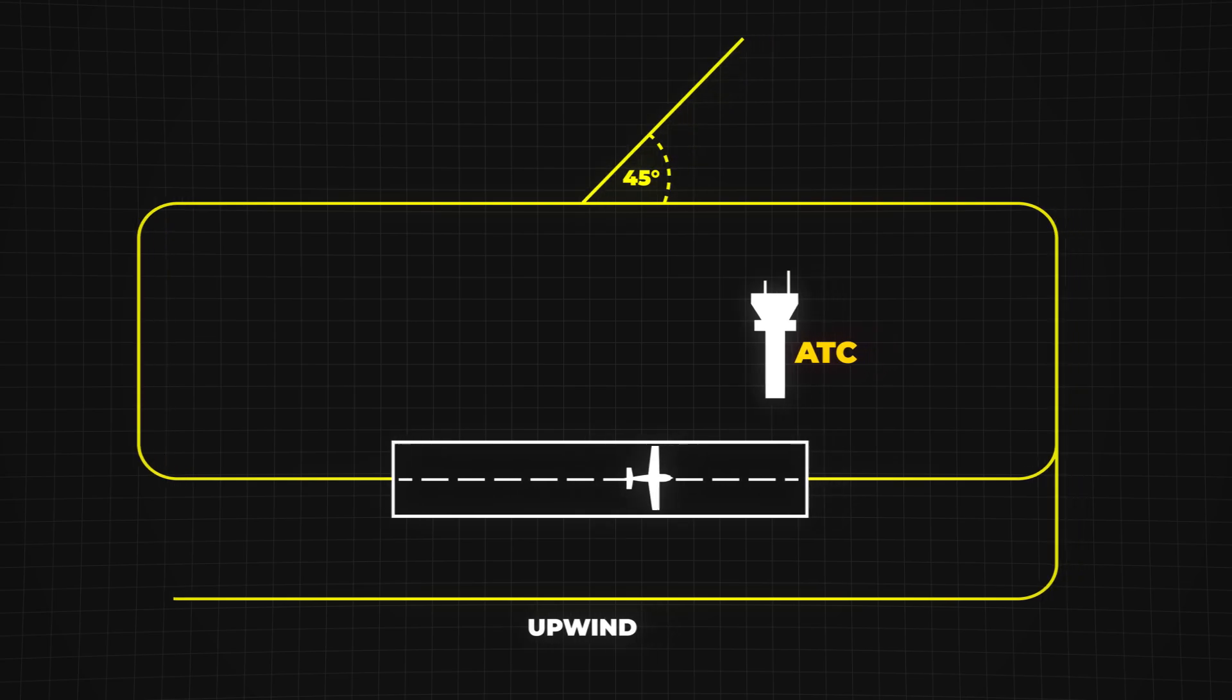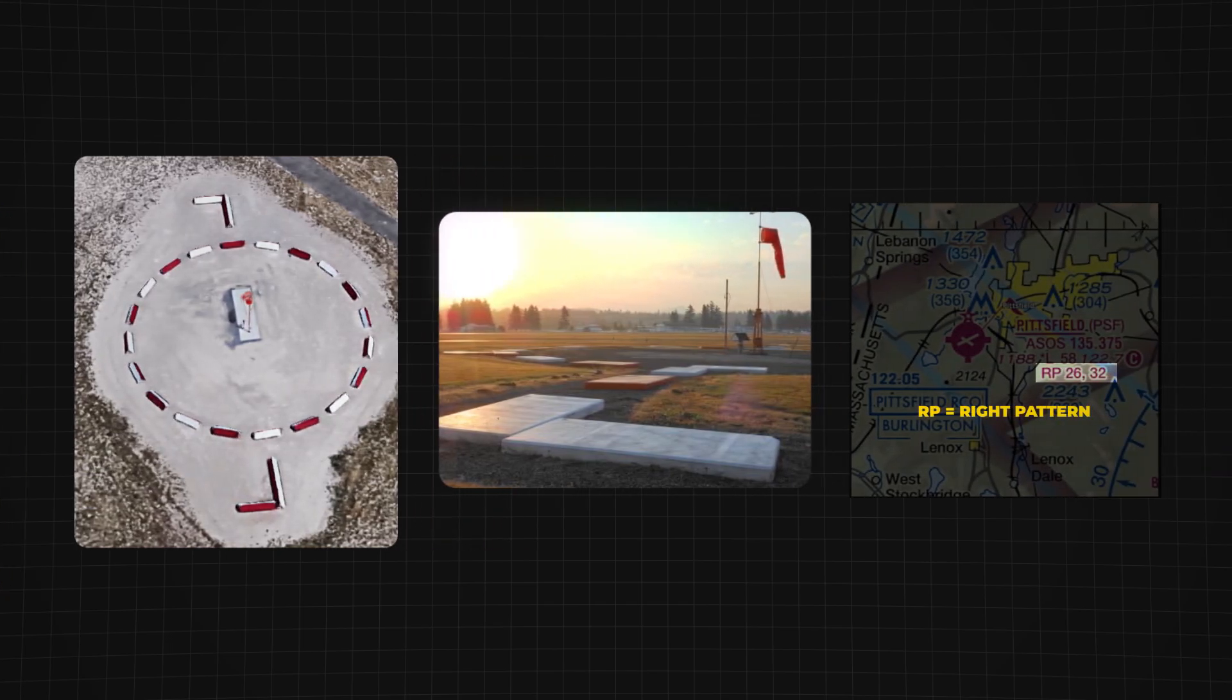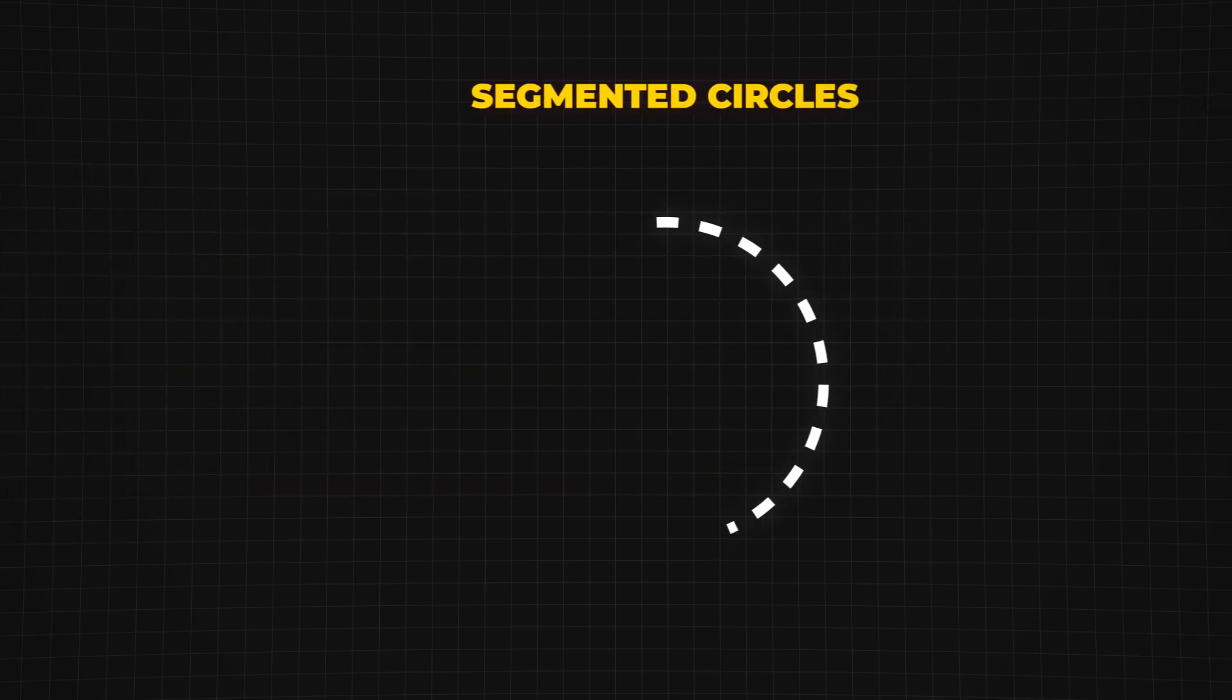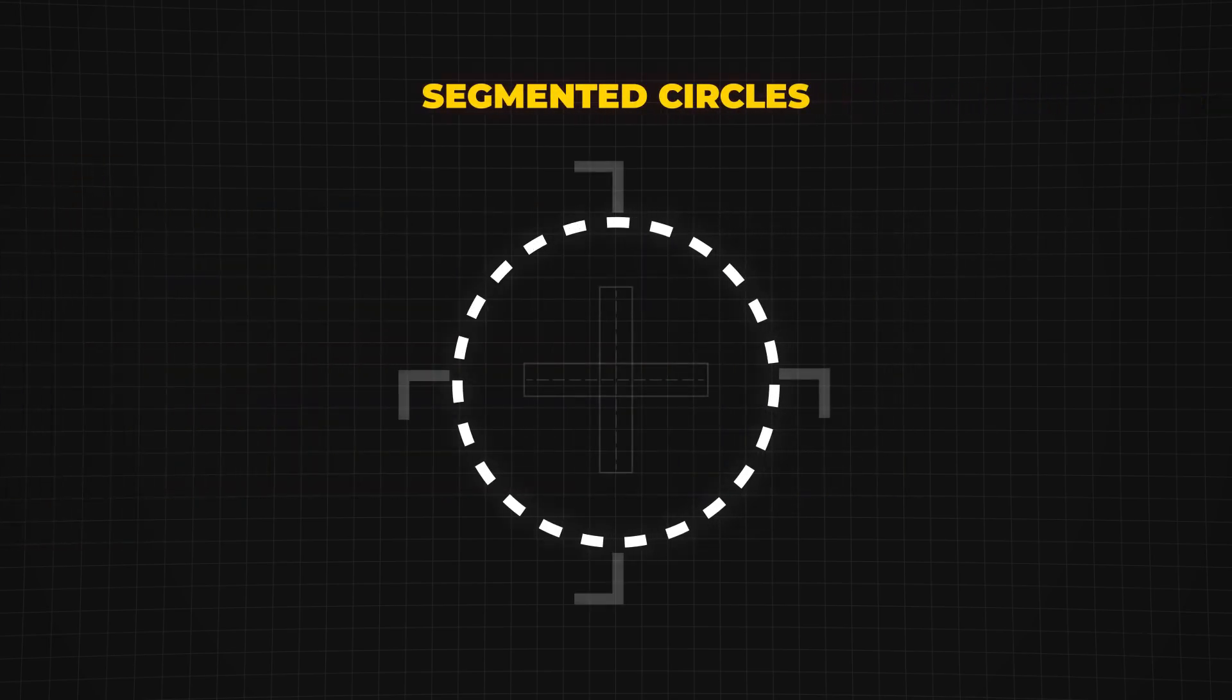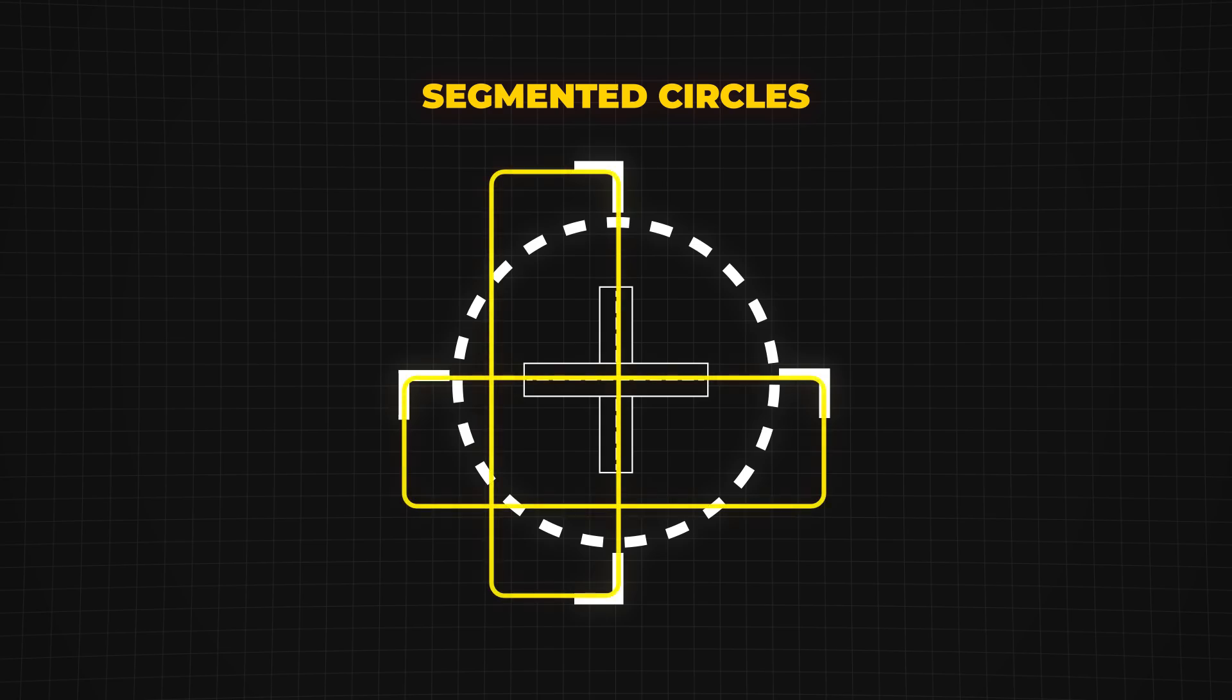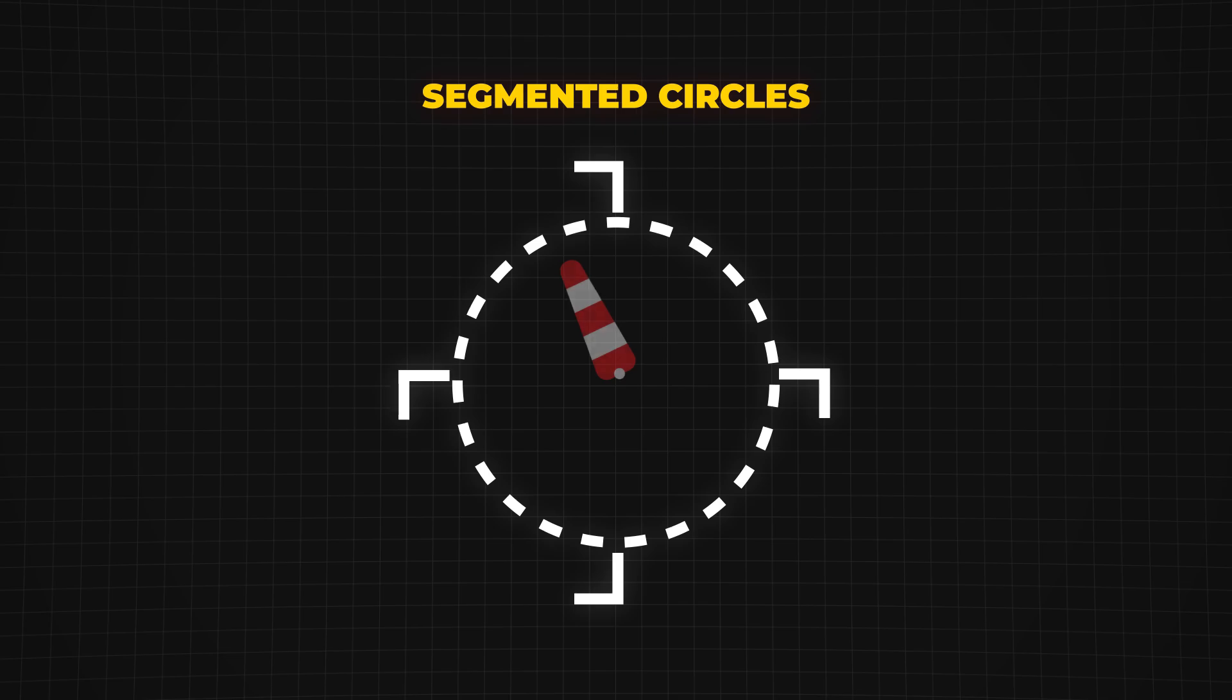To help pilots identify traffic patterns and wind conditions, airports use segmented circles and wind indicators. A segmented circle is a ground-based visual aid that shows the correct pattern direction for each runway. Wind indicators, such as wind socks and tetrahedrons, help pilots determine wind direction and speed before takeoff and landing.